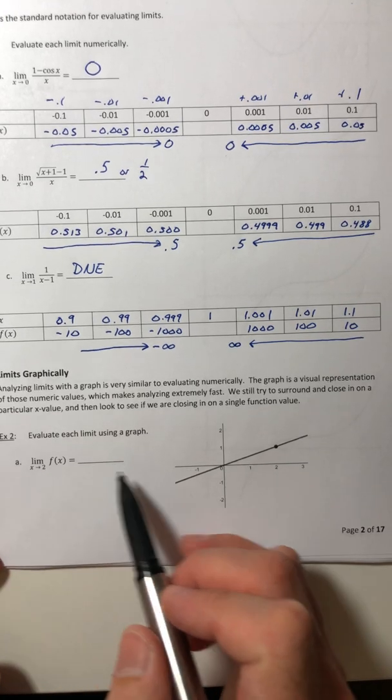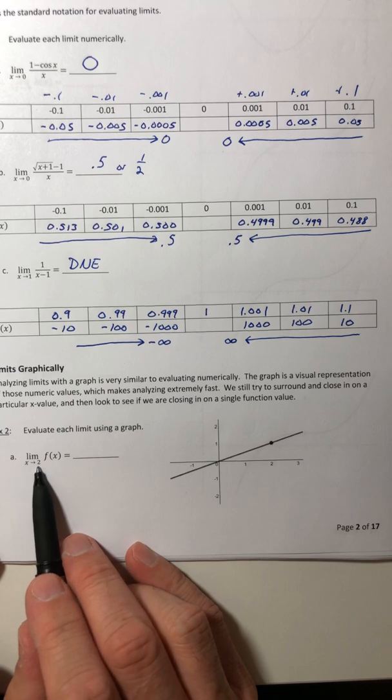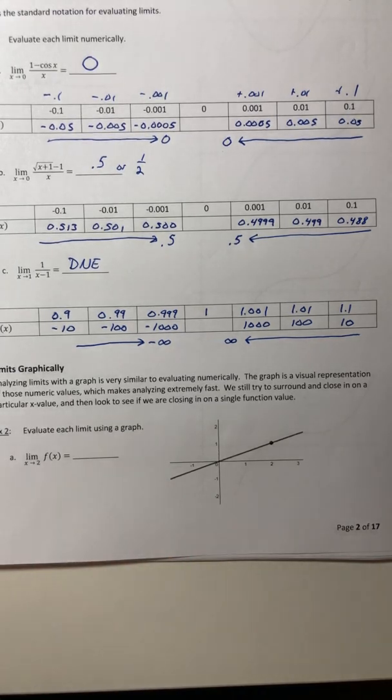All right. So same thing, evaluate the limit, but now we're going to use this graph. So as X is approaching two, what is happening with the Y values or the function values?